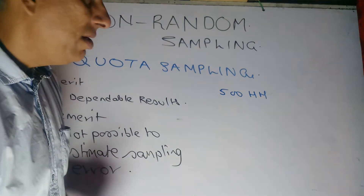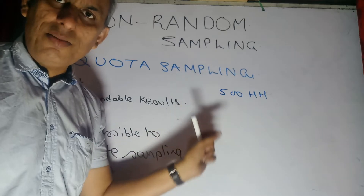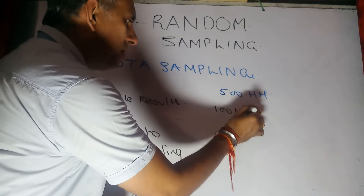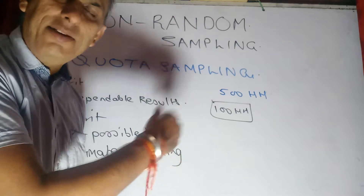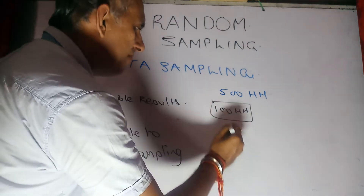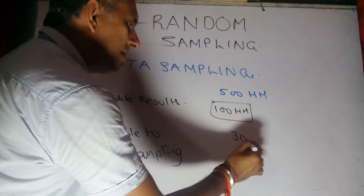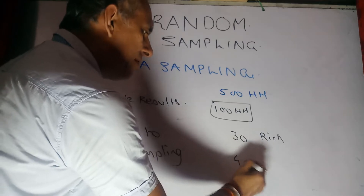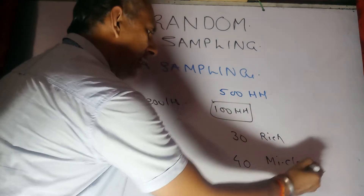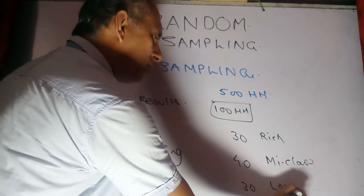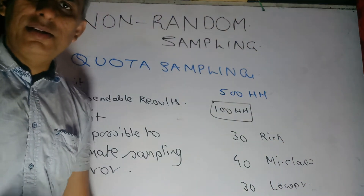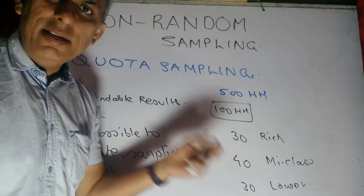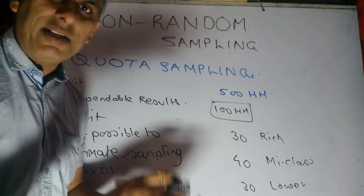We were trying to find out the average income of the household. Instead of all 500, we take a sample of 100 households and generalize the result. So what we did was take around 30 from the rich segment, 40 from the middle class, and the remaining 30 from the lower middle class or the poor section.